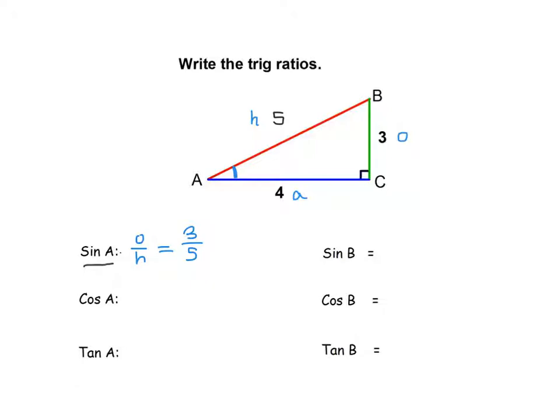Cosine of A, angle A. Remember, cosine is adjacent over the hypotenuse. So the adjacent side is 4, the hypotenuse is 5.